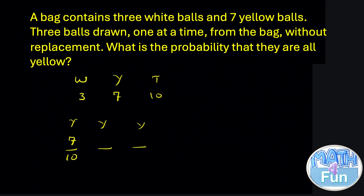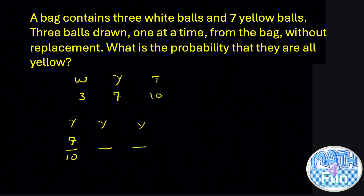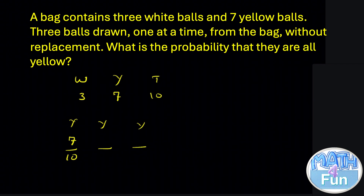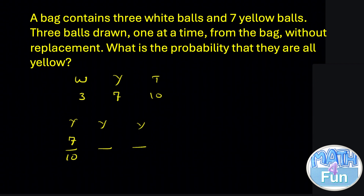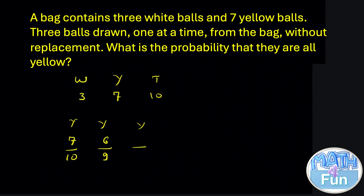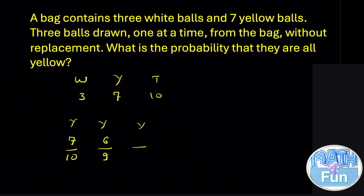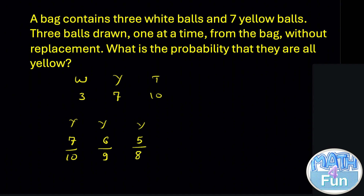Since it's without replacement, when you take a ball out you don't return it. So the total becomes 9 and the yellow becomes 6. The probability of the second ball being yellow is 6 out of 9. For the third ball: yellow becomes 5 and total becomes 8, so it's 5 over 8.